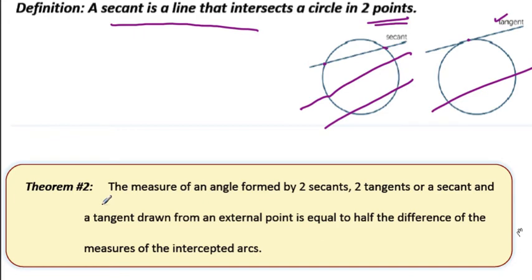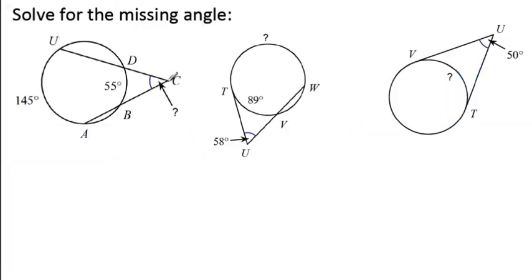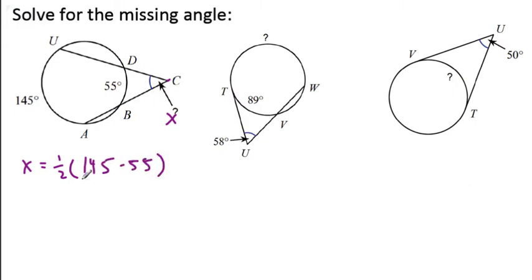The next theorem deals with secant lines or tangents. The measure of an angle formed by two secants, two tangents, or a secant and a tangent drawn from an external point is equal to half the difference of the measures of the intercepted arcs — so in the last theorem you added the two arcs; this one is half the difference. In the first example we have two secants. The measure of angle X at the external point equals one half the difference. You have to subtract the smaller arc from the larger arc so you don't end up with negatives. X equals one half of 90, which is 45 degrees.